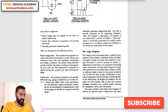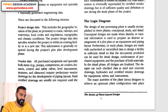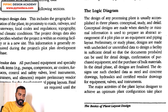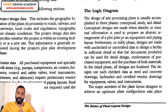Let me go to a specific page. This topic belongs to Chapter 1, titled 'The Basics of Plant Layout Design.' It states: 'The design of any processing plant is usually accomplished in three phases.' All our plants are processing plants. The piping is one of the major parts, along with equipment, structure, instrumentation, civil works, and electrical. All disciplines are involved. Piping design is a part of process plant engineering.